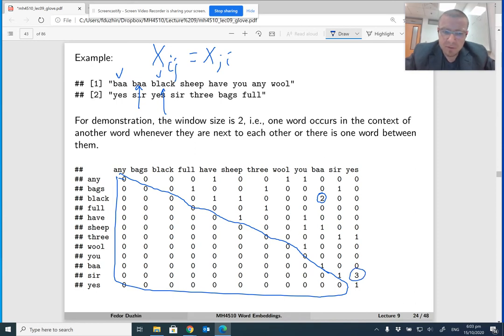Or if, say, you look at this number 3, yes and sir, then the words yes and sir appear three times in the context of each other. So yes, sir, sir, yes, and yes, sir. All right, I hope this is clear.